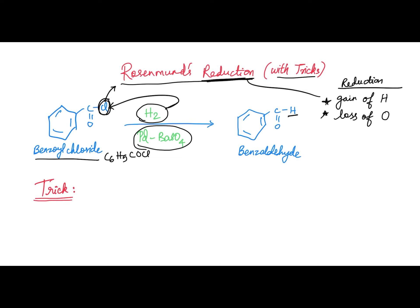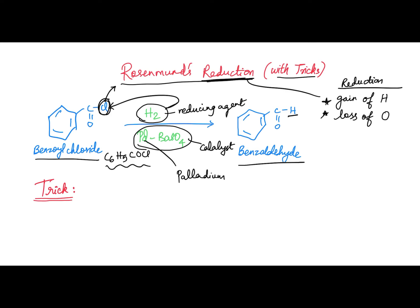So what is Rosenmann's reduction? Benzoyl chloride, C₆H₅COCl, reacts in the presence of H₂, which is a good reducing agent, and Pd/BaSO₄, which is the catalyst — Pd is palladium and BaSO₄ is barium sulfate. The product formed is benzaldehyde. Cl is a good leaving group; it leaves and H adds in its place. This is reduction.